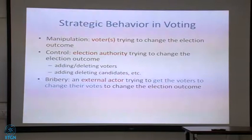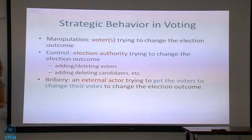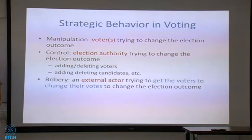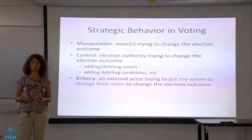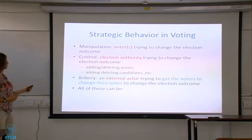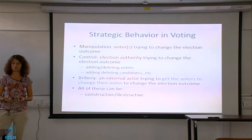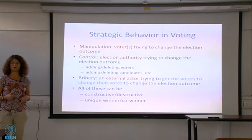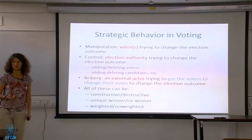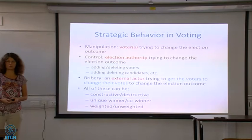That's an external actor trying to change the election outcome by driving voters. Bribery is well-defined: someone pays voters to change their opinions. Voters can be bought wholesale — you buy a voter to change their opinion altogether — or you bribe voters depending on how much you want them to change. Like manipulation, control can be constructive or destructive: we may be promoting a preferred candidate or trying to harm a despised candidate. It can target a unique winner or a co-winner, and it can be weighted or unweighted.